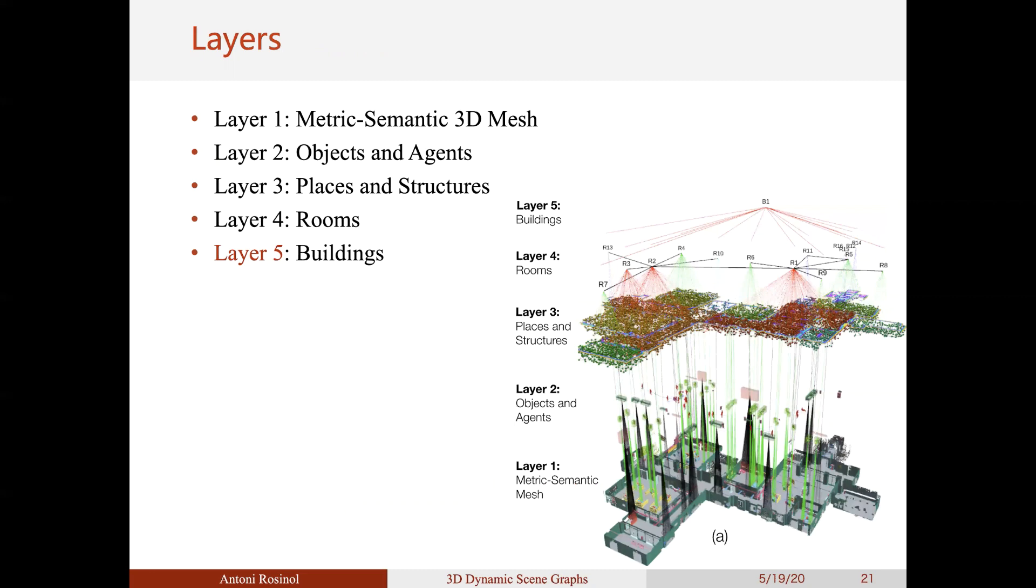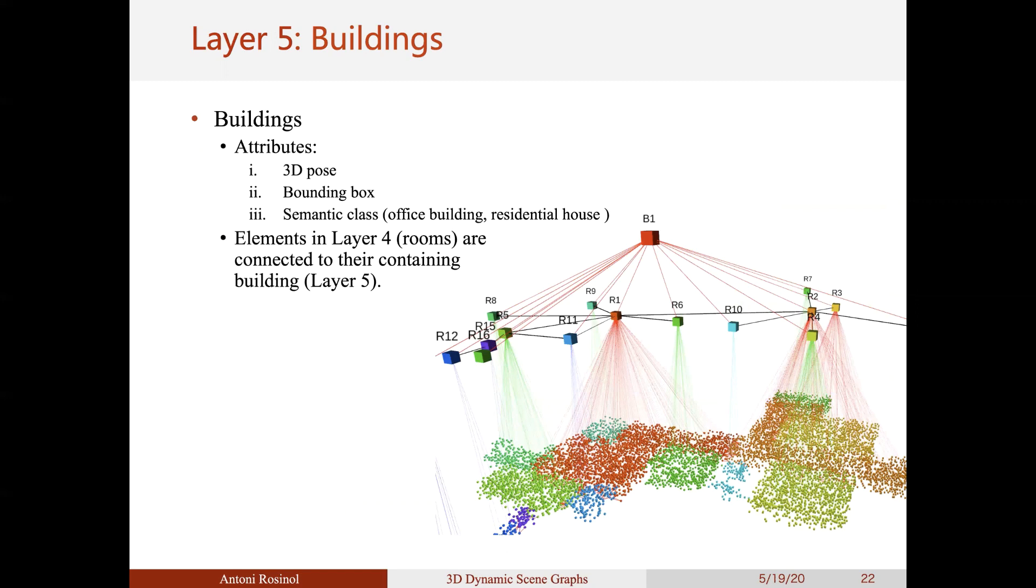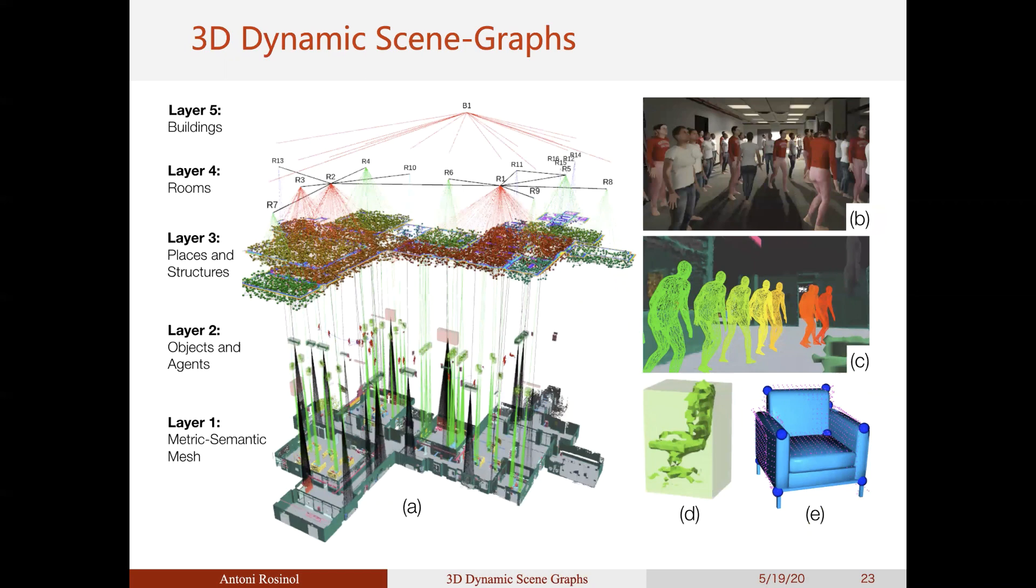Finally, we abstract the 3D scene graph using building nodes. In our case, we have a single building node that encompasses all room nodes. Finally, we have our hierarchical 3D scene graph with meaningful connections between different layers that can be exploited for a myriad of applications, as we see in detail in our paper.